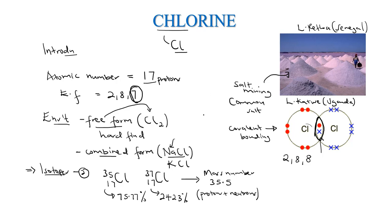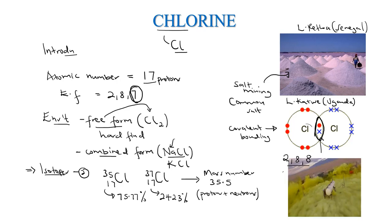As such, chlorine will have the properties of covalent compounds. In its gaseous form, chlorine is a greenish-yellow gas — it's hard to tell whether it's green or yellow, so we call it a greenish-yellow gas. That is basically the introduction of chlorine.